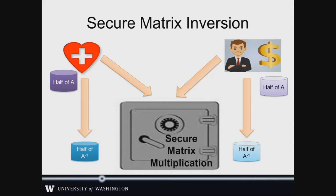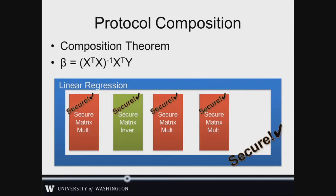So we can check off multiplication and move on to inversion. This can be modeled as some subtraction and a lot of multiplication. Since we already have multiplication, we can rely on the security from that multiplication protocol to get our inversion protocol to be secure. And finally we get to use a handy composition theorem that says: if our protocol can be modeled as calls to other secure sub-protocols, it is itself secure. So we can use our proofs — secure multiplication, secure inversion — to establish secure linear regression.